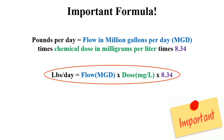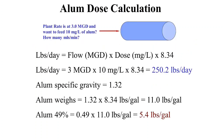This formula is very important and should be memorized by water treatment plant operators. If you're working at a plant and the computer system is down, you have to manually set the alum feed pump to feed 10 milligrams per liter of alum at a plant operating at 3 million gallons per day. How do you know how many milliliters per minute you need to feed?